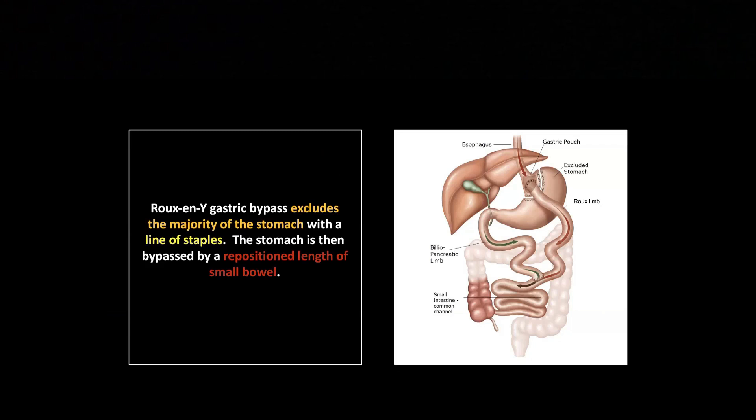A Roux-en-Y gastric bypass excludes the majority of the stomach with a line of staples, leaving all but a tiny portion of the fundus excluded. They then transect the small bowel and re-implant one limb into the stomach — the Roux limb, also known as the efferent limb or alimentary limb — carrying the food. That is basically a section of jejunum sewn into the stomach, almost always into the anterior aspect.